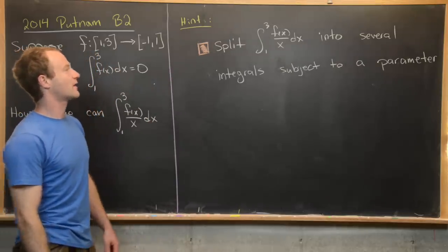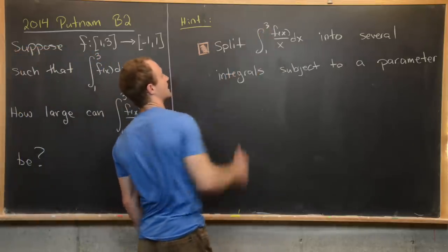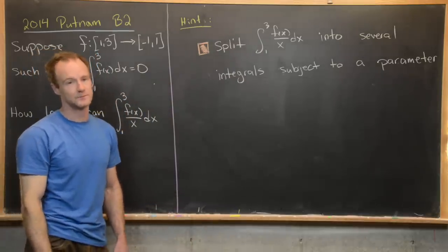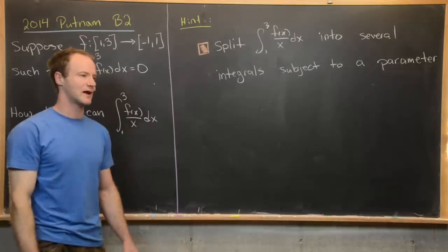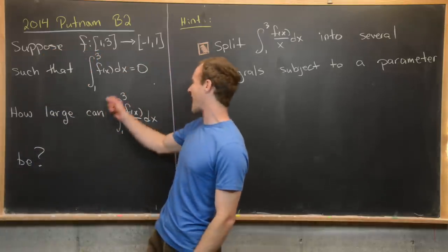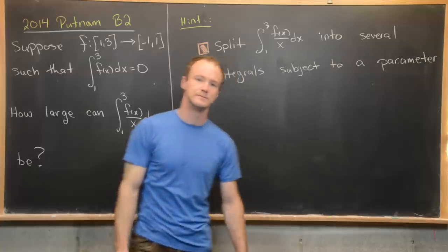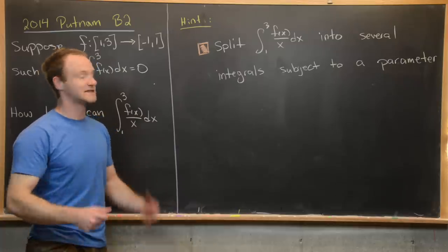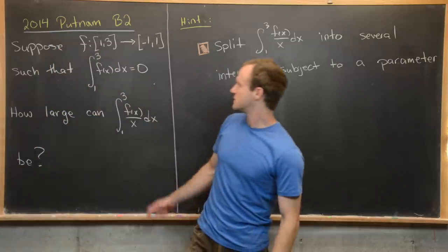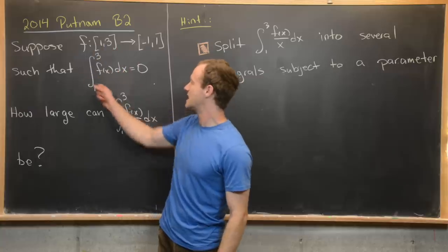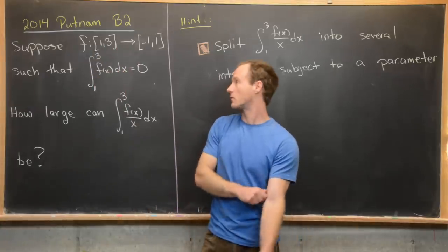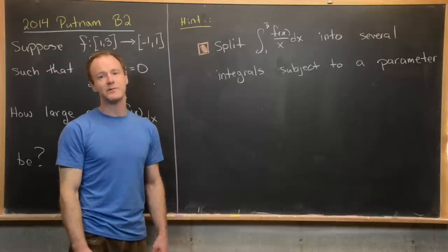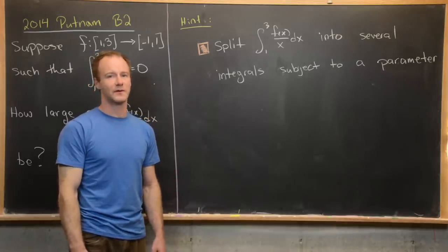We want to split the integral from 1 to 3 of f(x)/x into several integrals subject to a parameter, and then tweak that parameter until we get some sort of maximum. Along the way, one of those integrals should take advantage of the fact that the integral from 1 to 3 of f(x) dx equals 0.